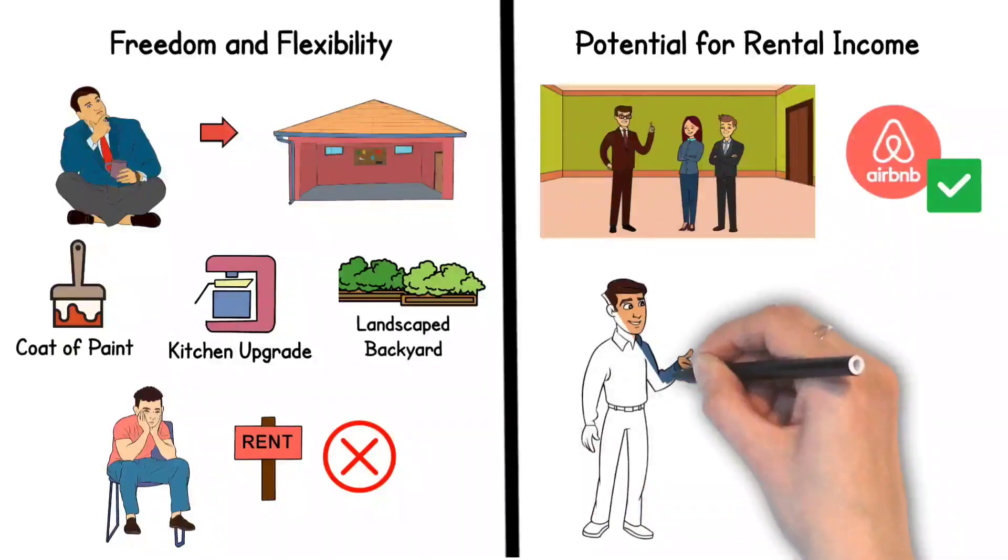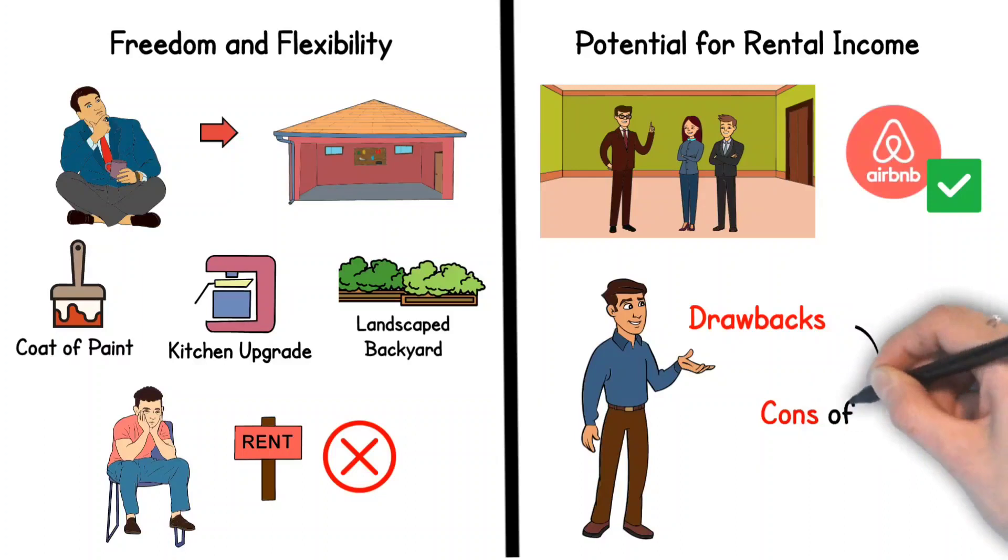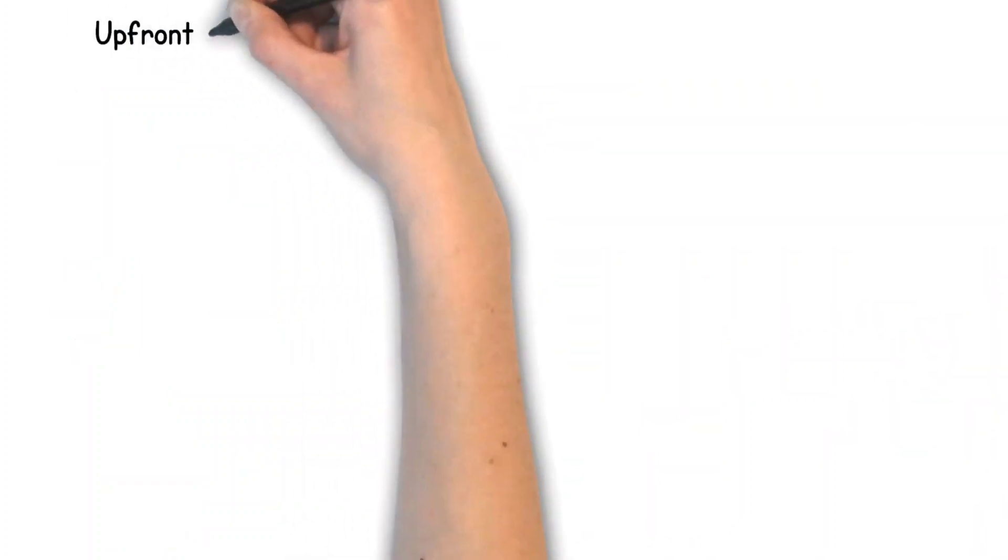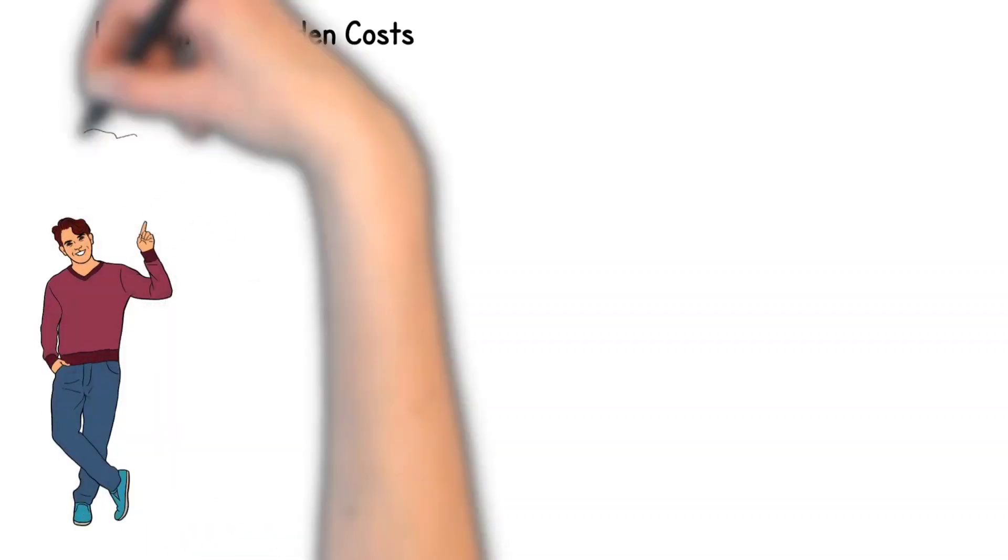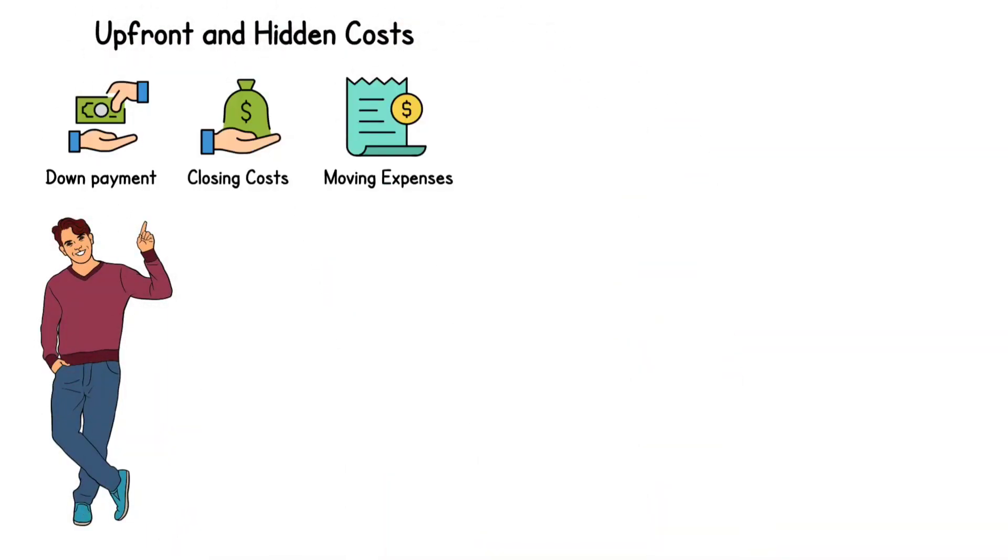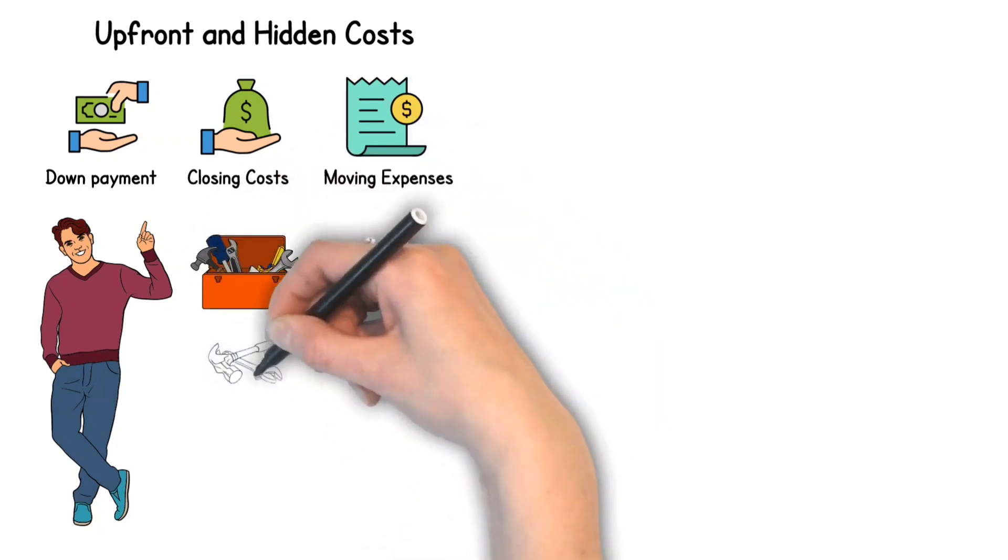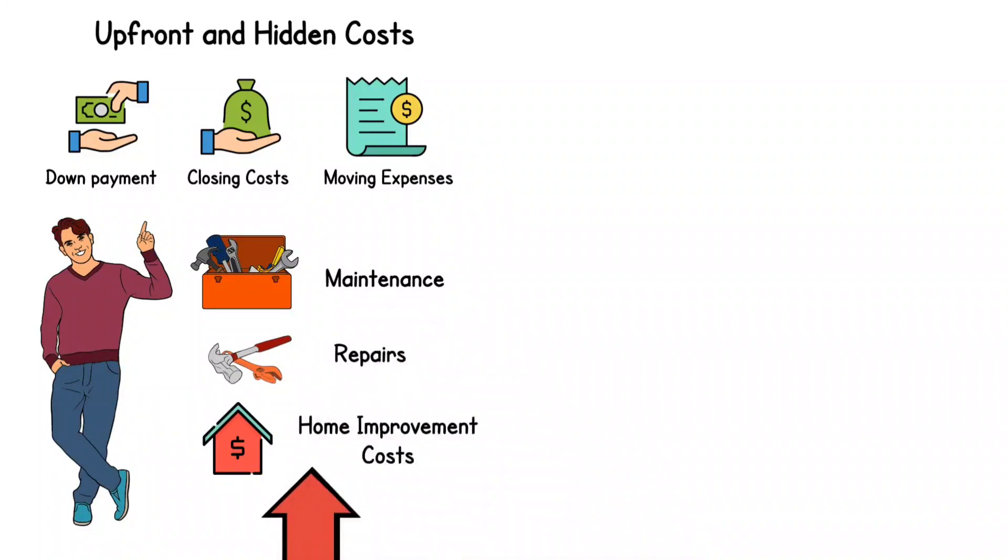But home ownership isn't all great and rosy. There are also some potential drawbacks to consider. Here are some of the cons of buying a home. Upfront and hidden costs. Buying a home involves significant upfront costs, including a down payment, closing costs, and moving expenses. Furthermore, as a homeowner, you're responsible for all maintenance, repair, and home improvement costs, which can add up over time.